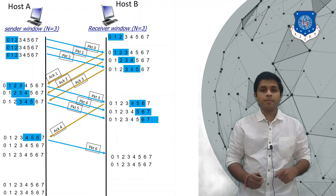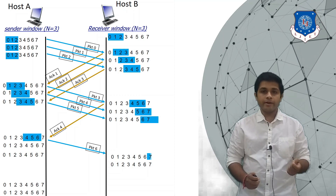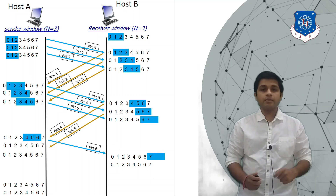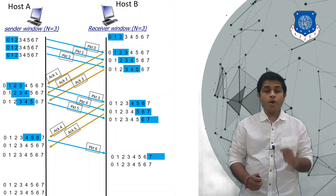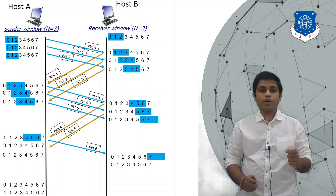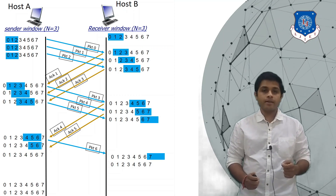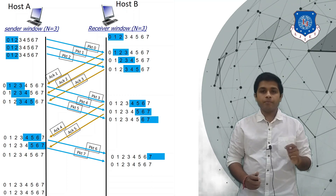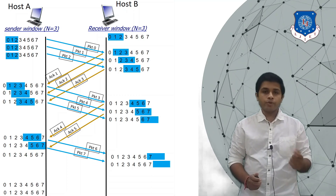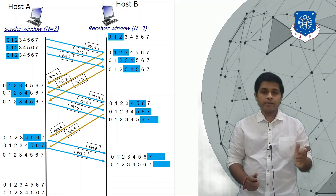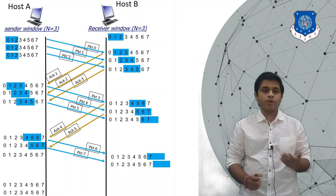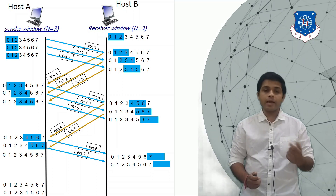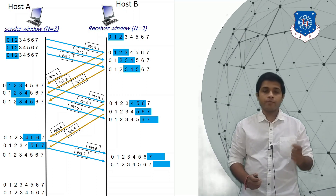As B receives packet 6, the window will slide, so now it is expecting packet 7. B will send acknowledgement ACK 5 for packet 4, so the window at the sender side will slide and the next packet sent is packet 7. B receives packet 7 and the window has slid out, so B is expecting no more packets. However, A has not received all the acknowledgements, so A will wait.